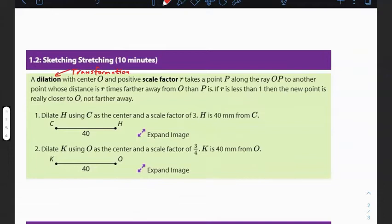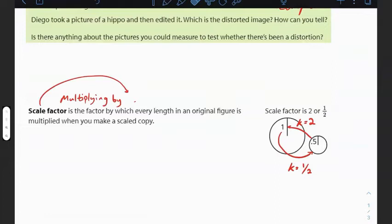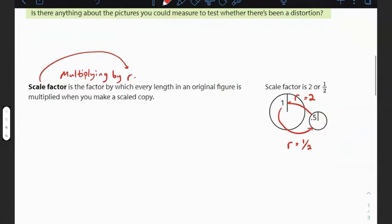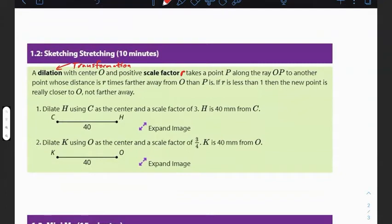A dilation with a center O and a positive scale factor R. They're using R. In college, we used K, but it's okay. So, positive scale factor R takes point P along the ray OP to another point, whose distance is R times farther away from O than P is. If R is less than 1, the new point is really closer.